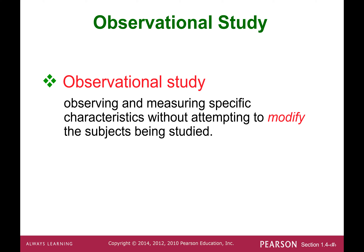In an observational study, researchers observe and measure specific characteristics without attempting to modify the subjects being studied. This is a very important concept: no modification is needed. You simply observe and then measure the specific characteristics of the participants.